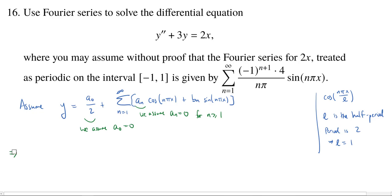Okay. So, what does this mean? Well, this means that we can now equate the right-hand side, this 2x, Fourier sine series. So, n equals 1 to infinity, (-1)^(n+1) times 4 over nπ, times sine of nπx. We'll equate this with y double prime plus 3y. Which now, okay, let's take two derivatives.